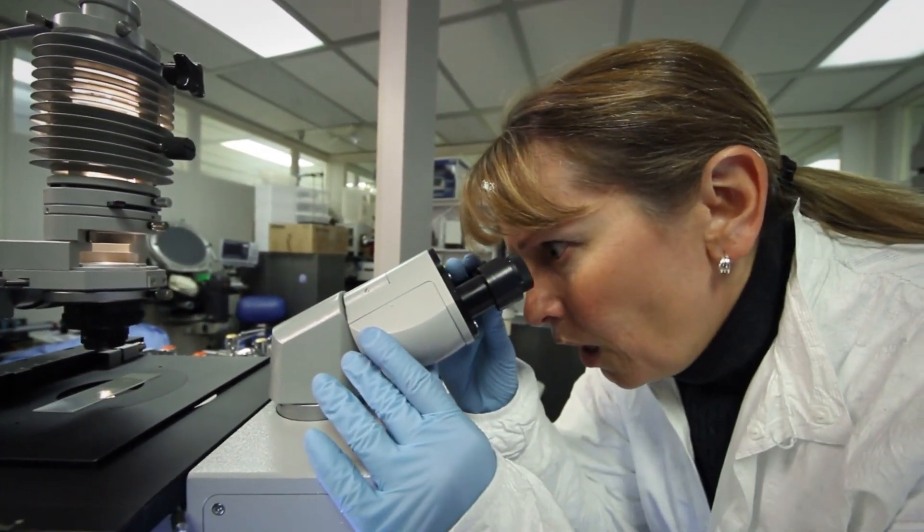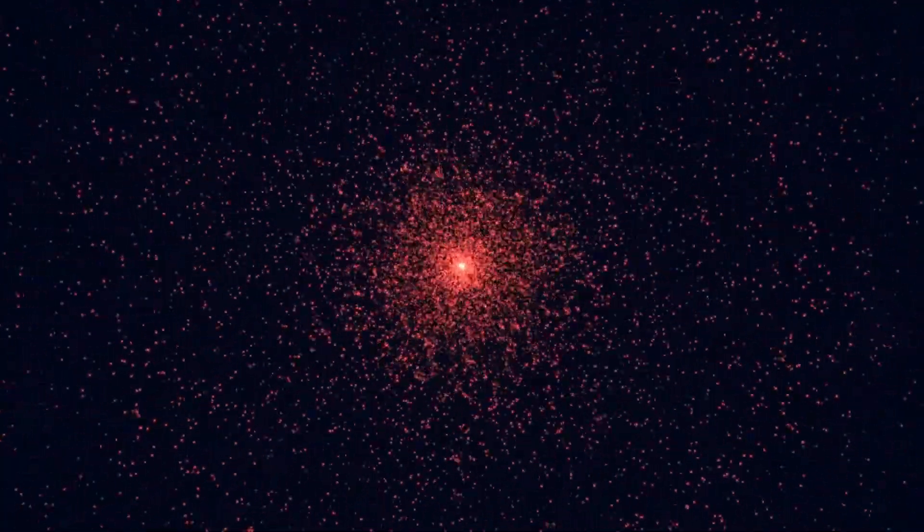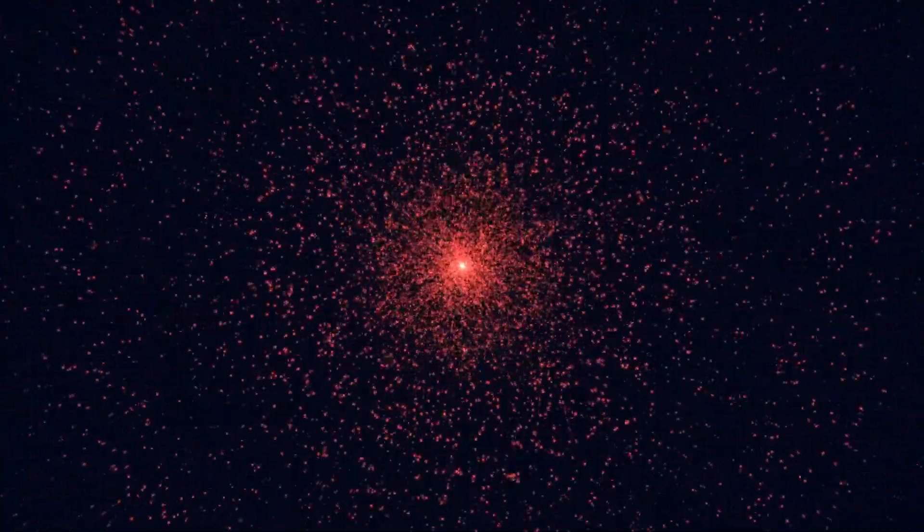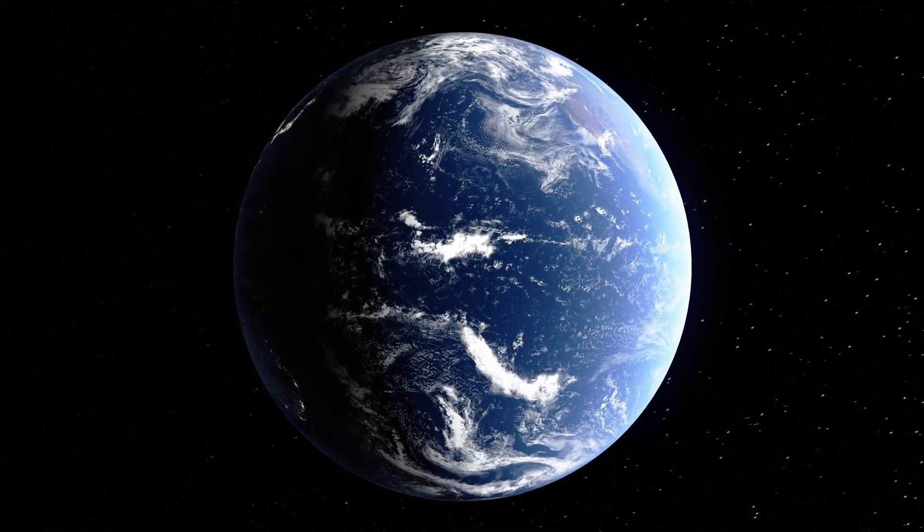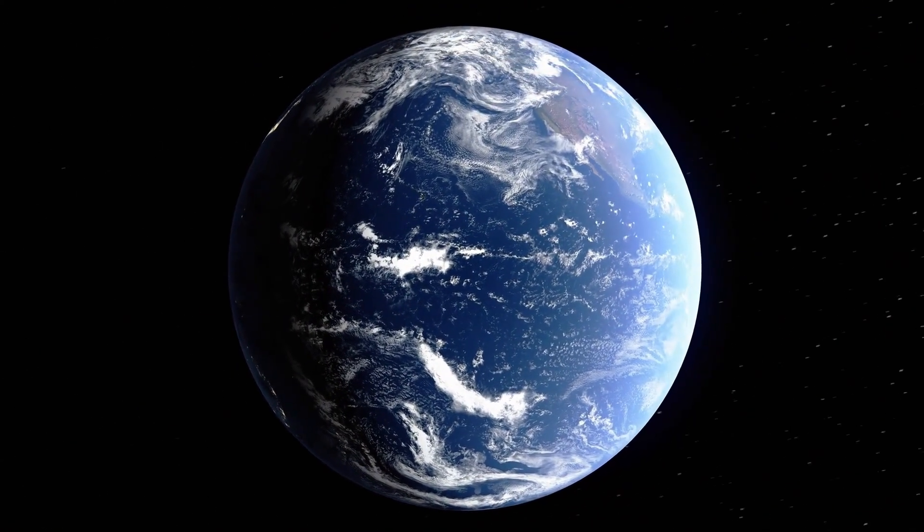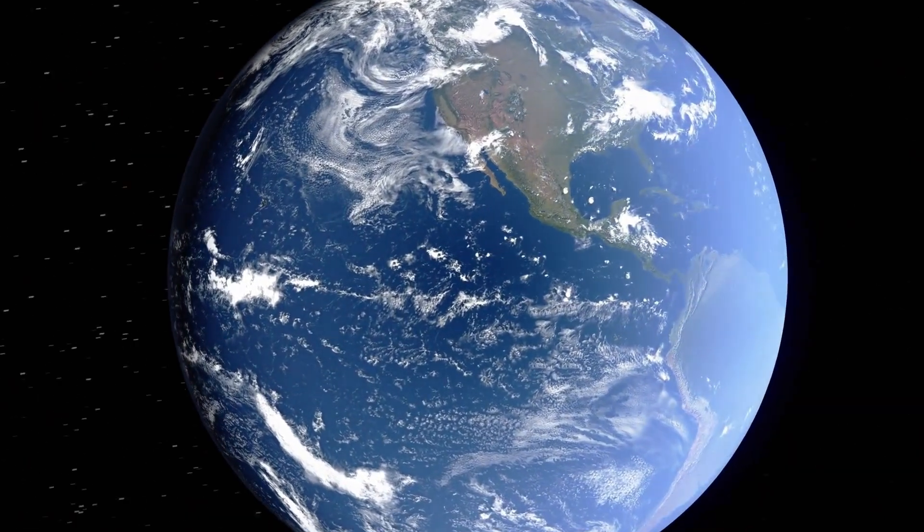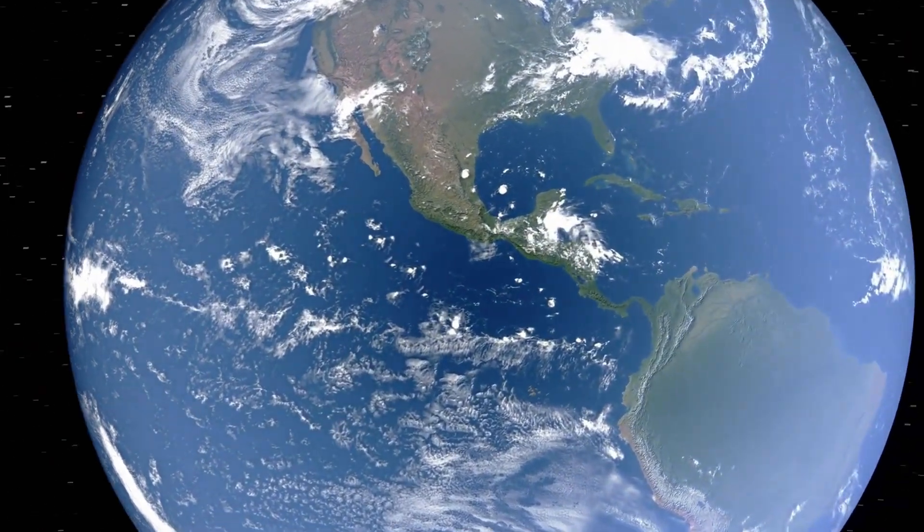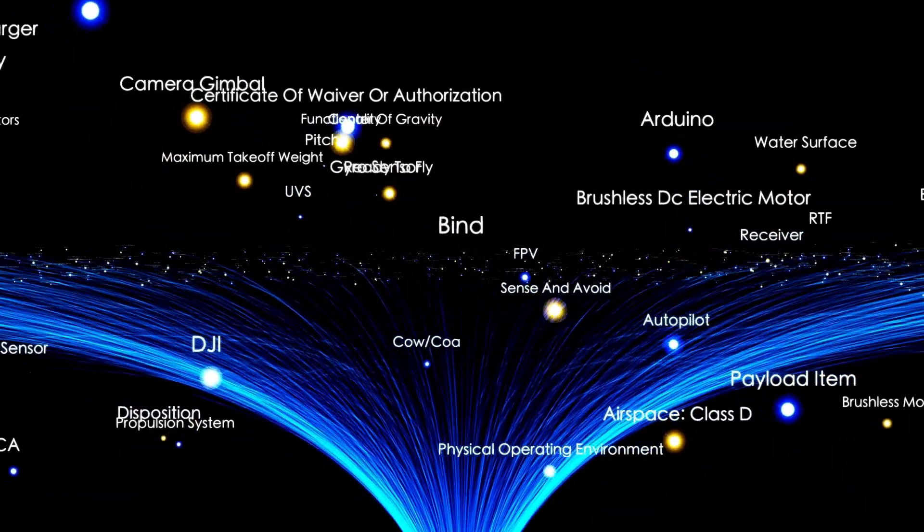Gamma-ray bursts, sometimes linked with certain supernovae, could strip away Earth's ozone layer, leading to harmful levels of ultraviolet radiation. This could endanger human health, disrupt ecosystems, and negatively impact agriculture. Additionally, the electromagnetic pulse from a nearby explosion could interfere with satellites and electronic systems. After the explosion, the collapsed core of Betelgeuse would leave behind a remnant, either a neutron star or, if the mass is sufficient, a black hole.